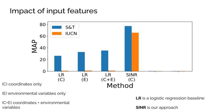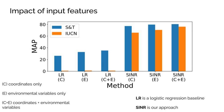Our method outperforms a popular logistic regression baseline, even when the baseline gets to use environmental variables as input instead of raw coordinates. Our method also benefits from environmental variables, but the benefit is small. This suggests that the network has learned a rich representation of the environment during training, making the environmental variables redundant.